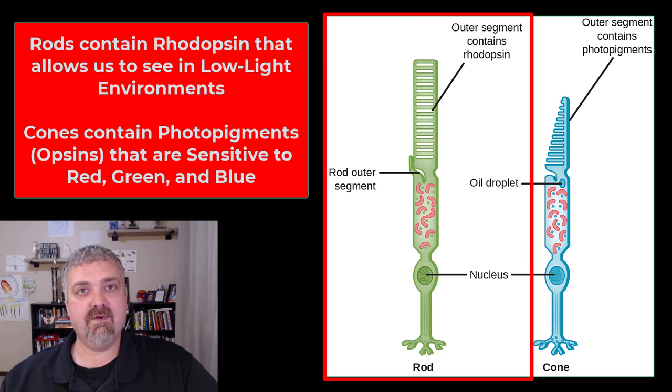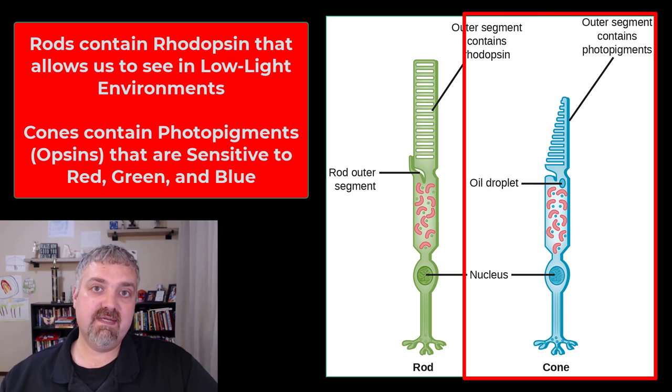The rod in its outer segment contains the photosensitive pigment rhodopsin, and your cones each contain photosensitive pigments called opsins, and they differ based on their wavelength.